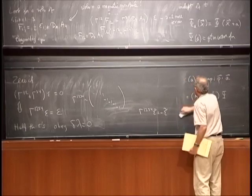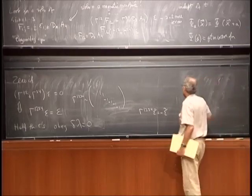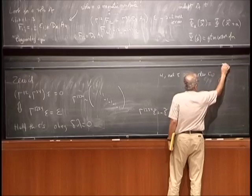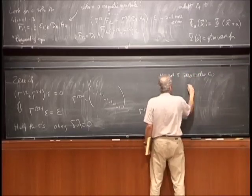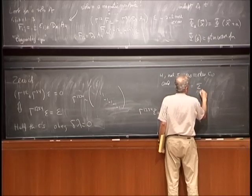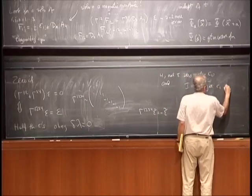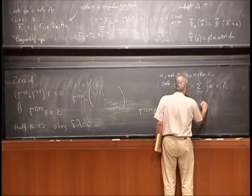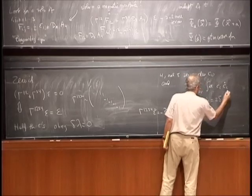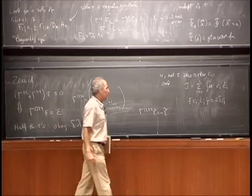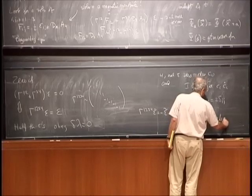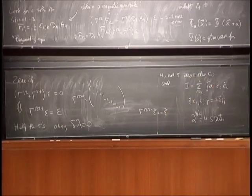That means there are four — not eight — zero modes c_i. The action becomes that of a four-dimensional Clifford algebra. Quantizing a four-dimensional Clifford algebra gives 2^(4/2) = 4 states. So what we've gotten is one of those small representations of supersymmetry.